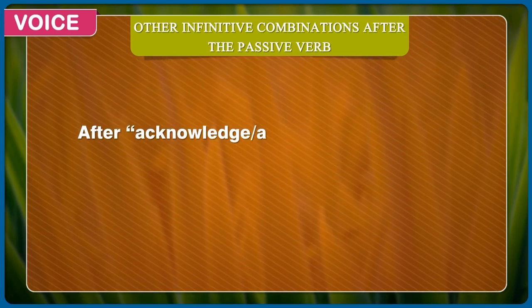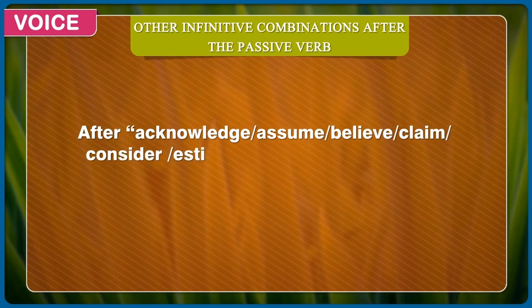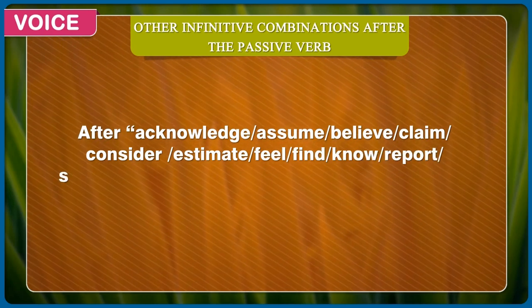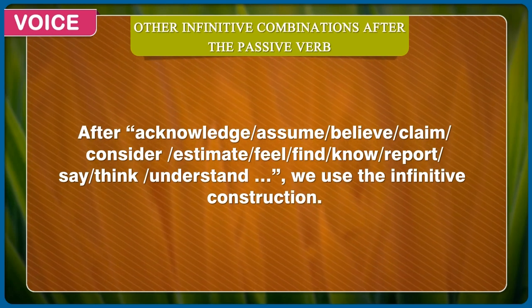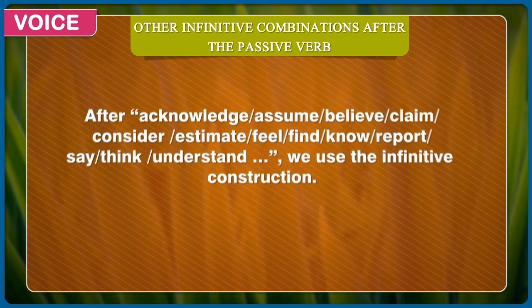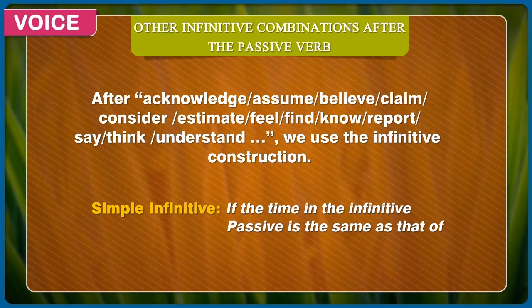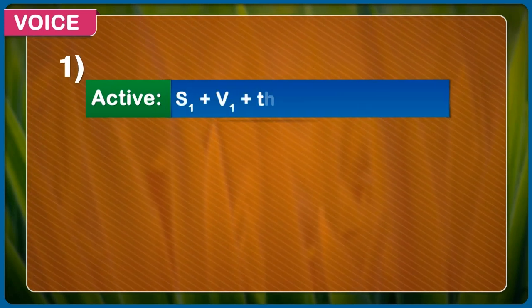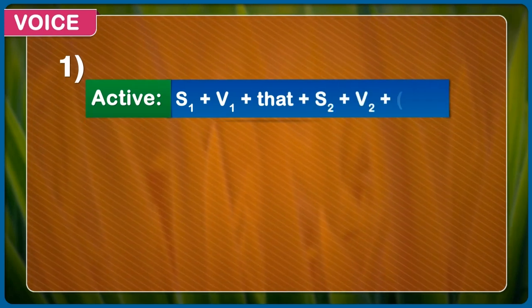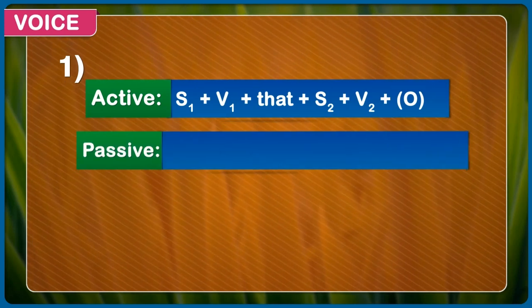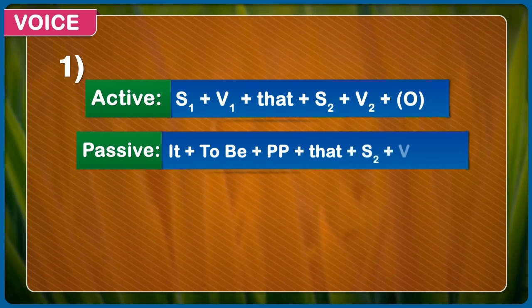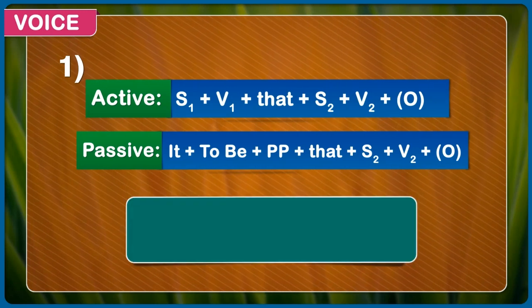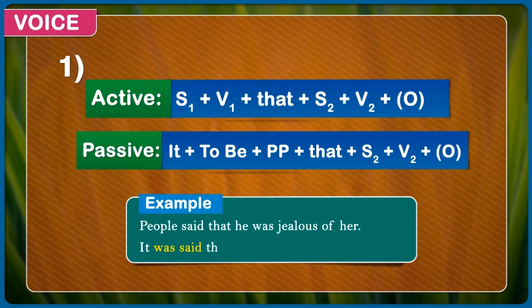Other infinitive combinations after the passive verb. After acknowledge, assume, believe, claim, consider, estimate, feel, find, know, report, say, think, or understand, we use the infinitive construction. Simple infinitive: if the time in the infinitive passive is the same as that of the main active verb. First — Active: first subject + first form of verb + that + second subject + second form of verb + object. Passive: it + to be + past participle + that + second subject + second form of verb + object. Example: People said that he was jealous of her. It was said that he was jealous of her.